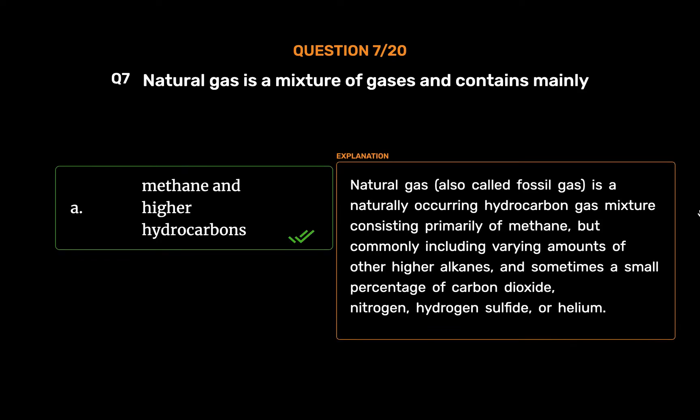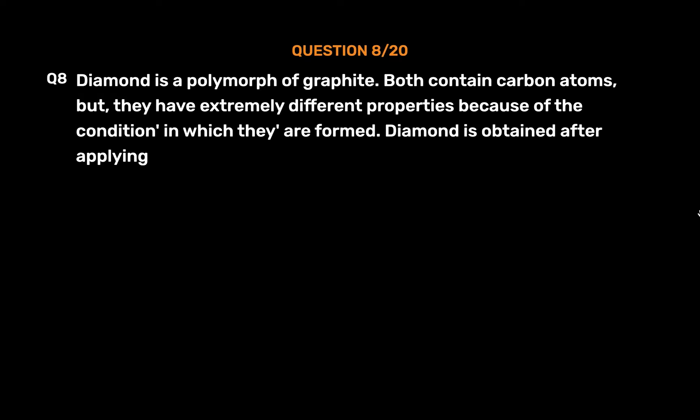Natural gas, also called fossil gas, is a naturally occurring hydrocarbon gas mixture consisting primarily of methane, but commonly including varying amounts of other higher alkanes, and sometimes a small percentage of carbon dioxide, nitrogen, hydrogen sulfide, or helium.